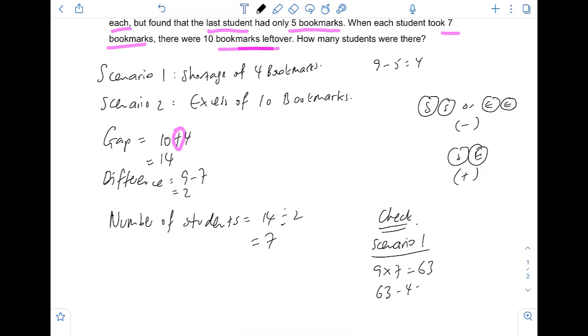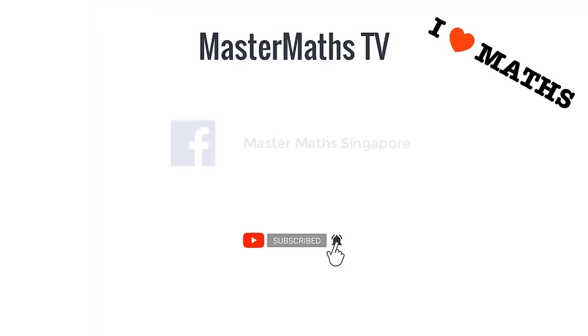Now let's check with scenario two. Scenario two says that you give each of the student seven bookmarks. So seven times seven students, that's 49, and even then you will have 10 excess. 10 excess, so actual is 49 plus 10, that will be 59, which is the same for both scenarios. That's how you can do a quick check. Final answer for this question: there were seven students.